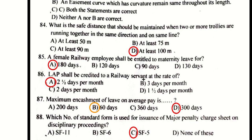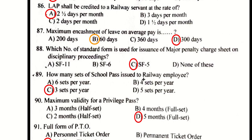The safe distance that should be maintained when two or more trolleys are running together in the same direction on the same line is at least 100 meters. A female railway employee is entitled to maternity leave for 180 days. LAP shall be credited to the railway servant at the rate of 2.5 days per month. The maximum encashment of leave on average pay at retirement is 300 days.